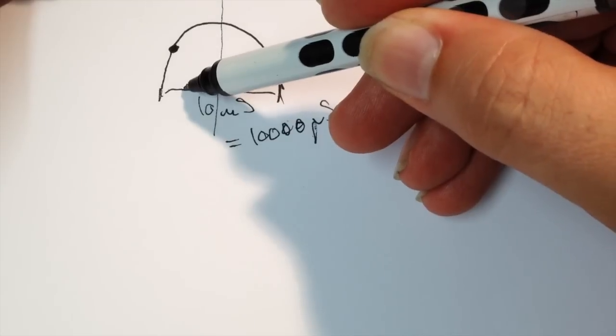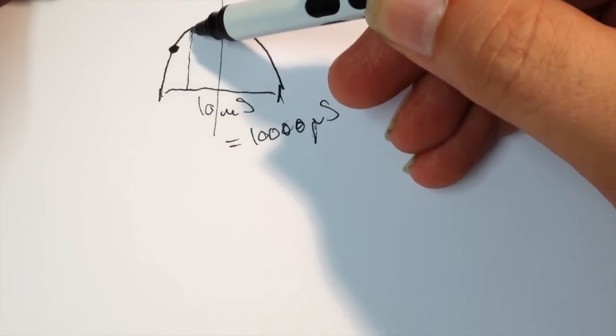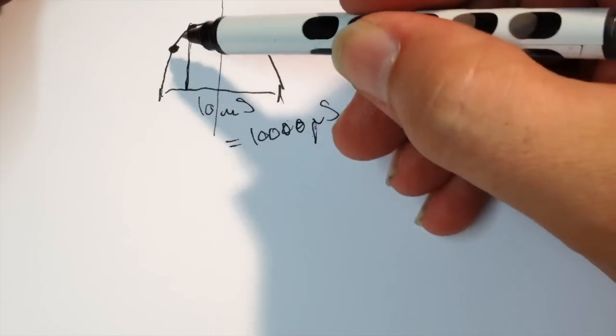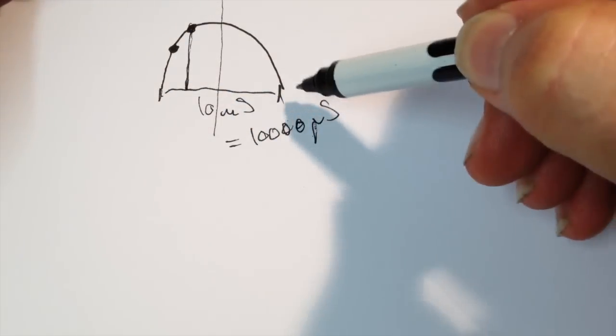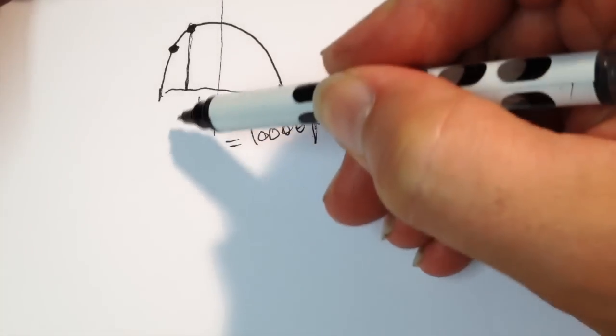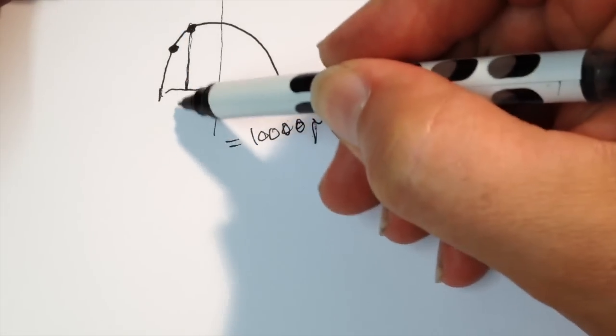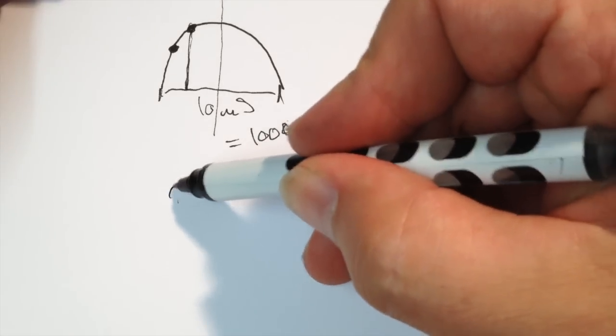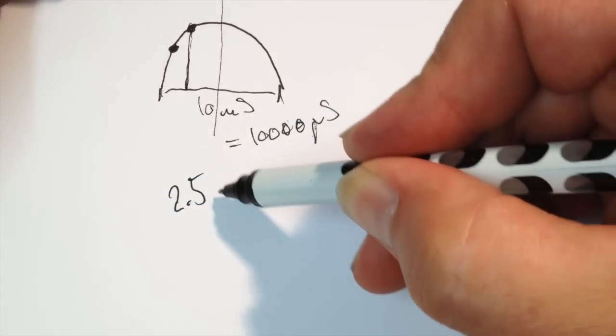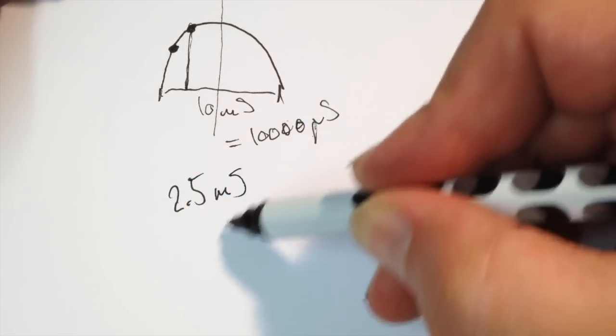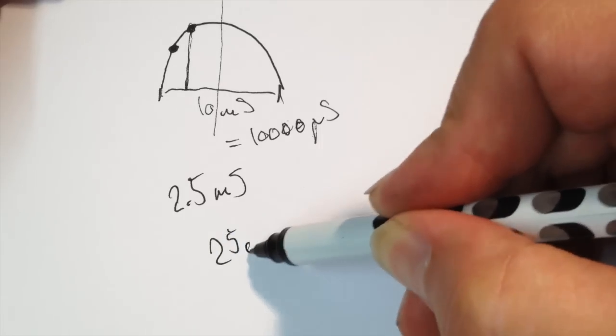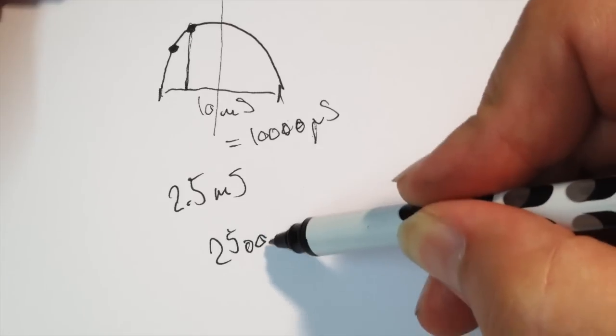We know that this half, okay, half is actually here, sorry about that. This is, of course, one quarter of that, and it's 2.5 milliseconds, 2.5 milliseconds or 2,500 microseconds.